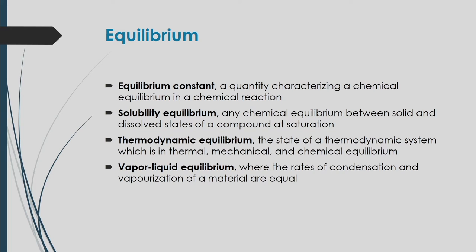Chemical equilibrium can be characterized by a chemical equilibrium constant — a quantity that characterizes a chemical equilibrium in a reaction. Solubility equilibrium refers to the chemical equilibrium between the solid and dissolved states of a compound at saturation. Thermodynamic equilibrium exists when a system is in thermal, mechanical, and chemical equilibrium simultaneously.